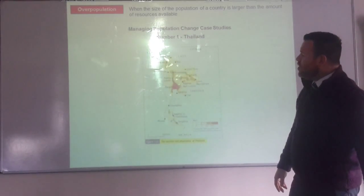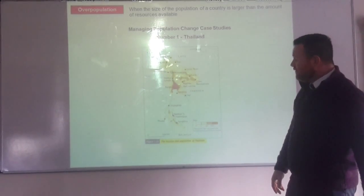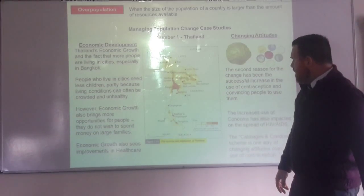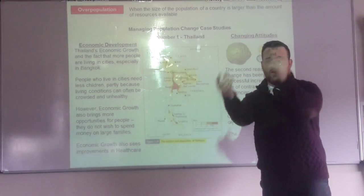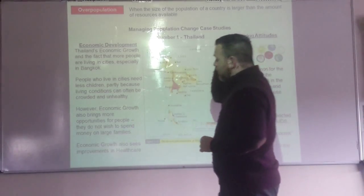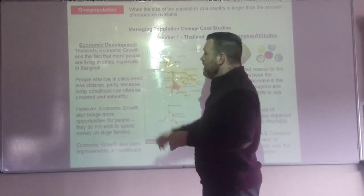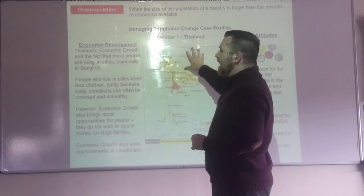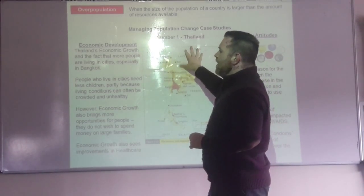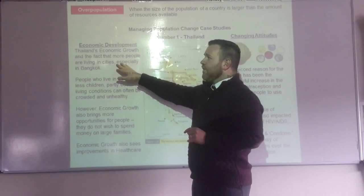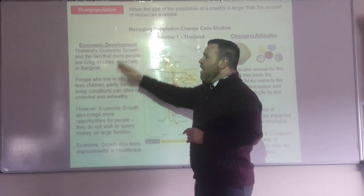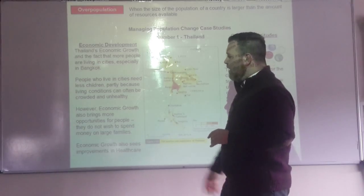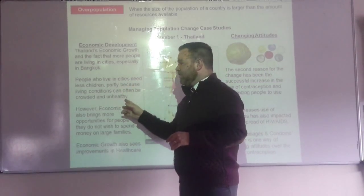The first of your two examples is Thailand. I'm going to quickly run through this because I don't think it's in your case study booklet — I think we just gave you one. So if you get completely stuck with China, remember that how they controlled their population in Thailand was they promoted economic growth, and the fact that more people are living in cities, especially in Bangkok.